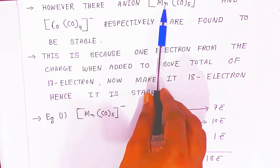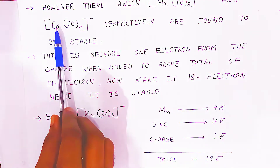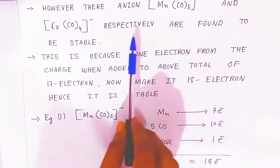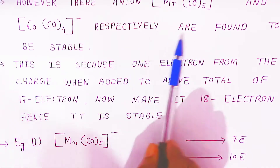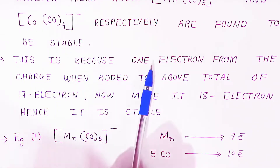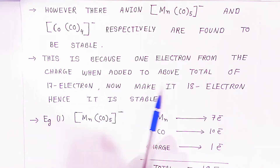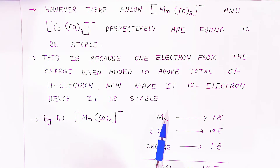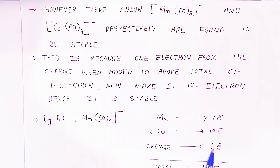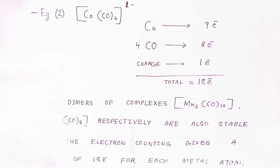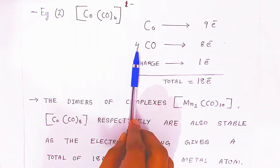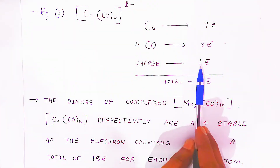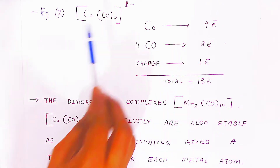However, the anionic complexes — Mn(CO)5⁻ and Co(CO)4⁻ — are found to be stable, because 1 extra electron from the negative charge is added to the total of 17 electrons, making it 18 electrons. In Mn(CO)5⁻, manganese provides 7 electrons, 5 carbonyl ligands donate 10 electrons, and the negative charge adds 1 electron: 7 + 10 + 1 = 18 electrons, making it stable. Similarly, in Co(CO)4⁻, cobalt provides 9 electrons, 4 carbonyl ligands give 8 electrons, and the negative charge adds 1 electron: 9 + 8 + 1 = 18 electrons, so this anionic complex is also stable.